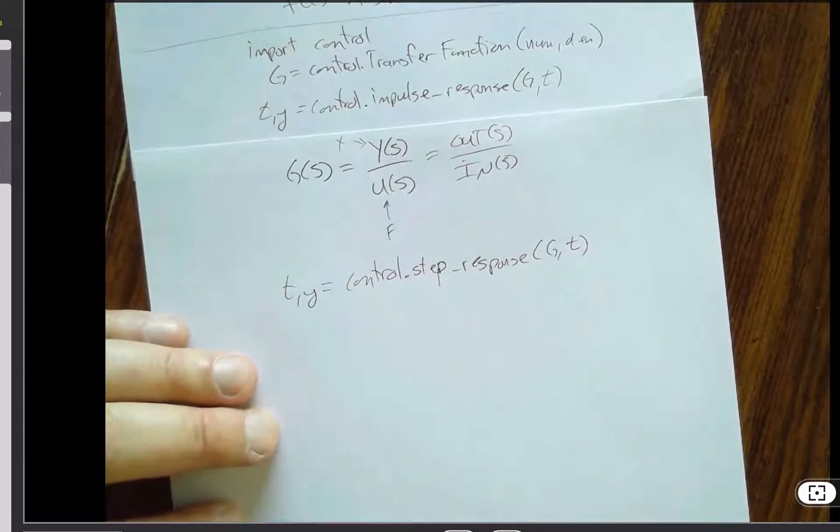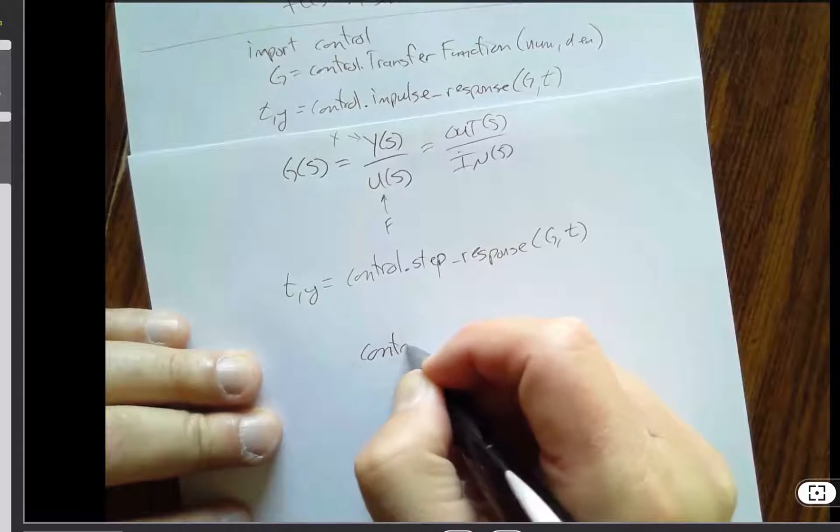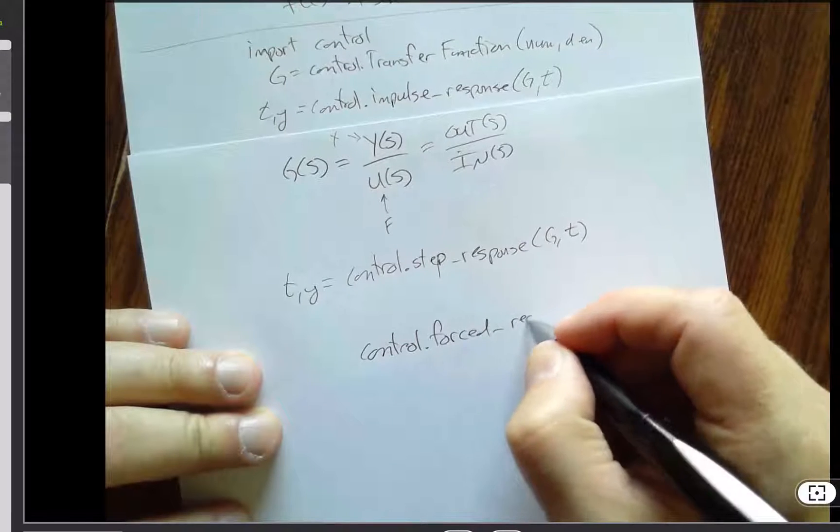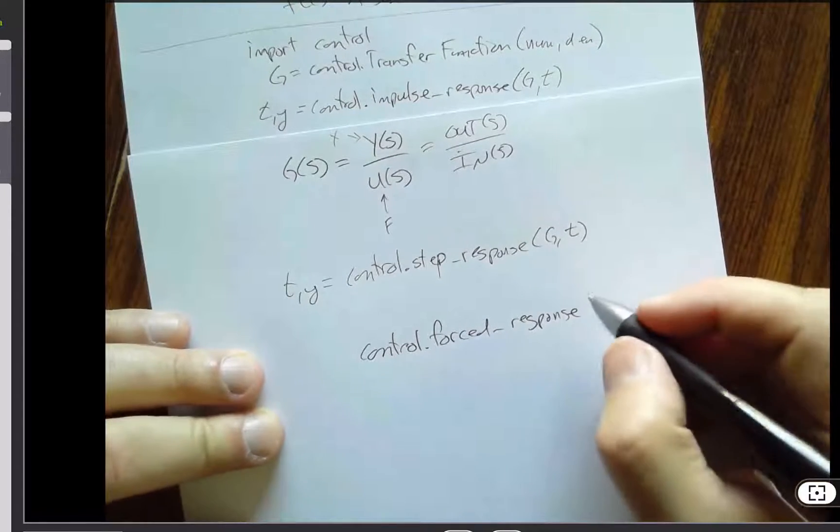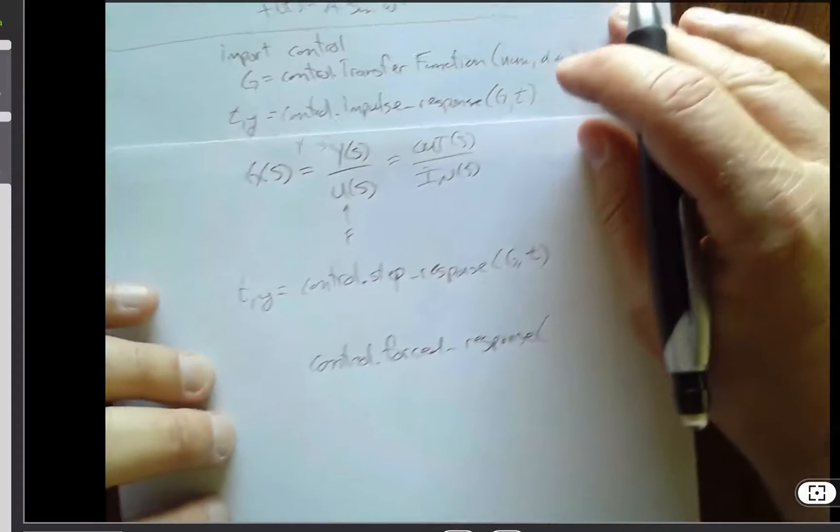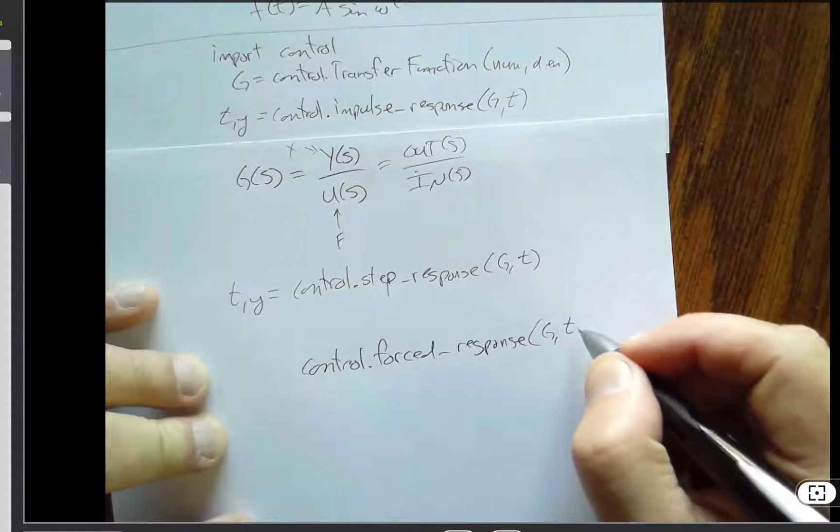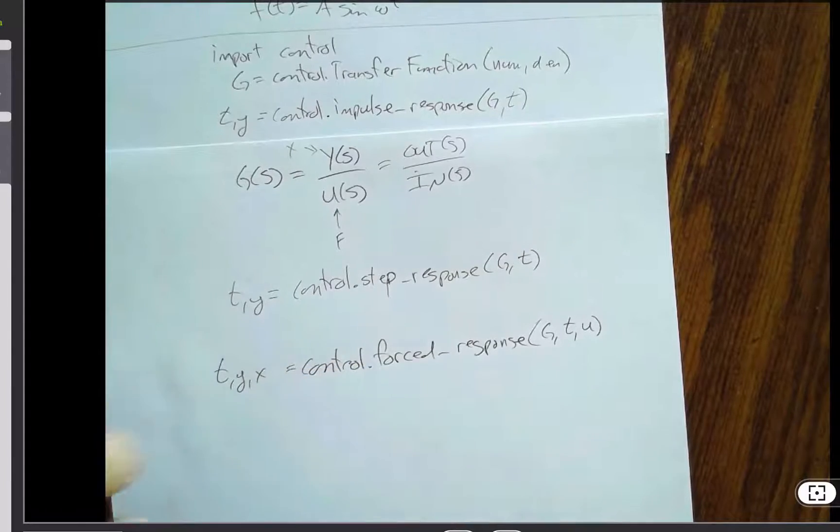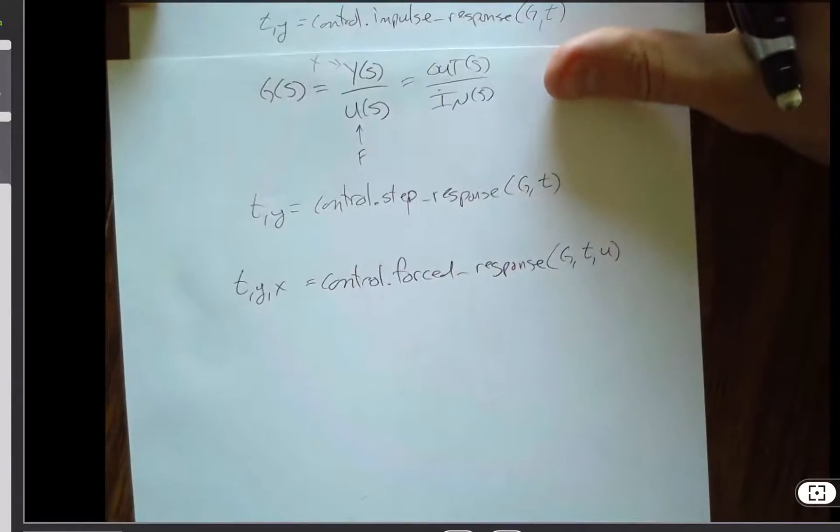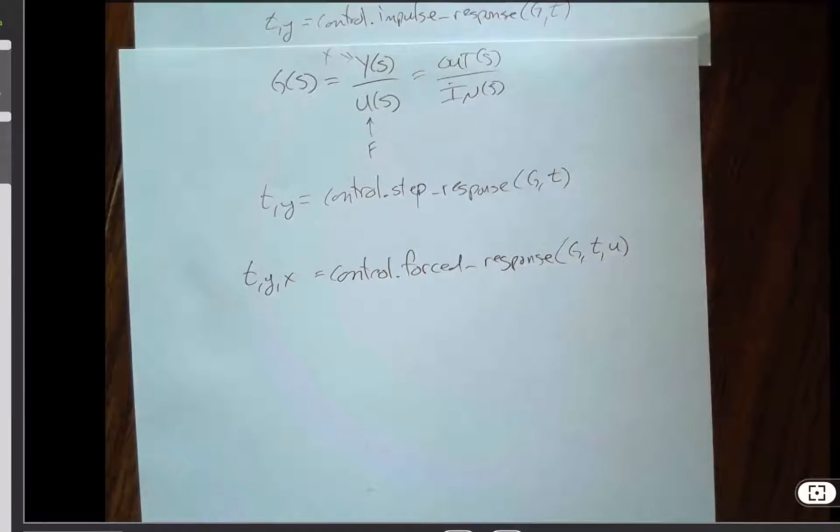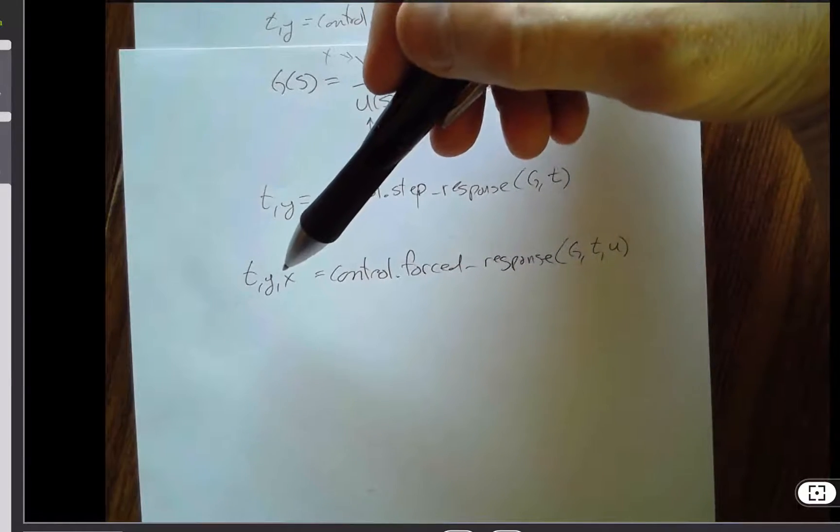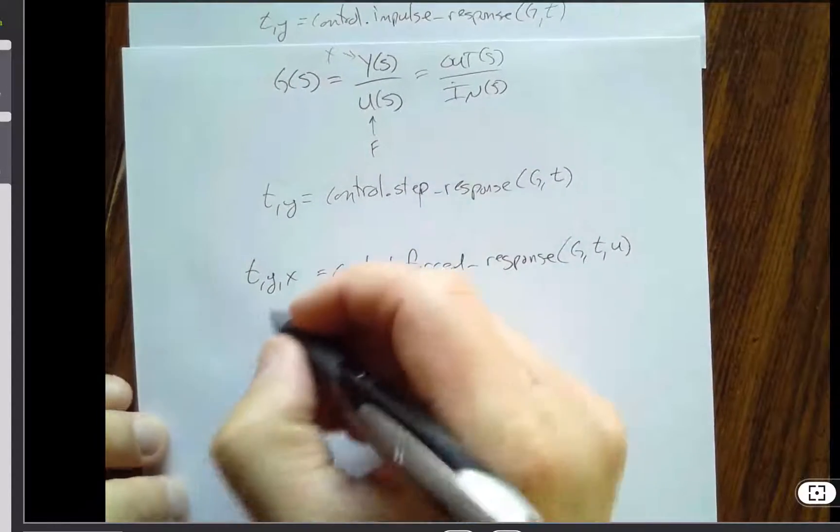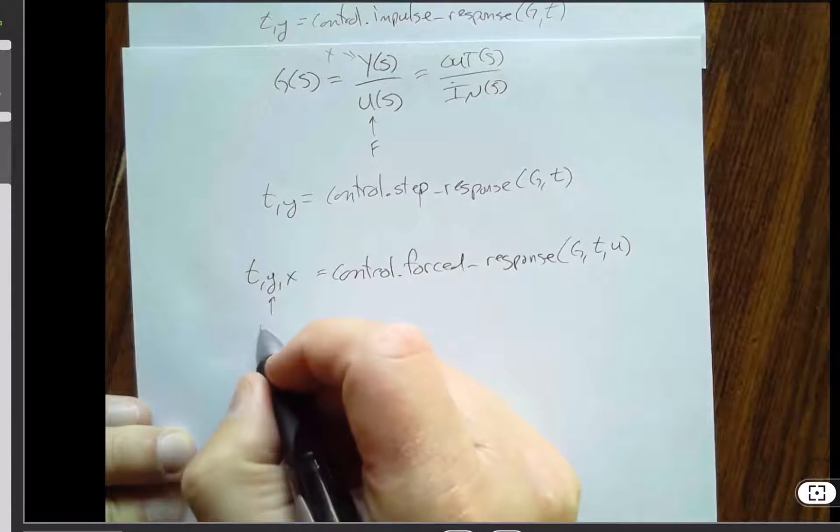But beyond those two responses, if I needed to do an arbitrary response to an arbitrary input, there's a function called forced response, which just means send in any input and get the corresponding output. But what happens is it would call it t comma u, and it would say that it would return t comma y comma x. And that's where they're using x and y both, which is pretty common in state space control language. But that might seem a little weird since we had said, well, x was equal to y, now what is x? So if this were a mass spring damper system, y is your final output, which is x, which is your position or displacement.